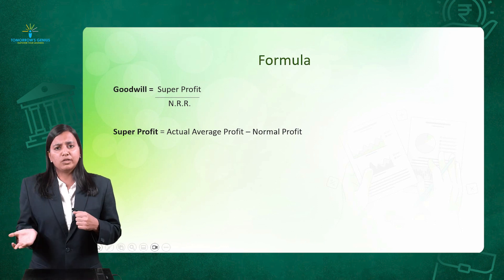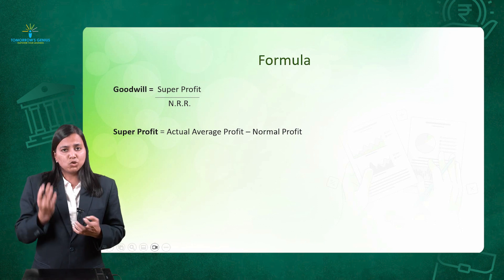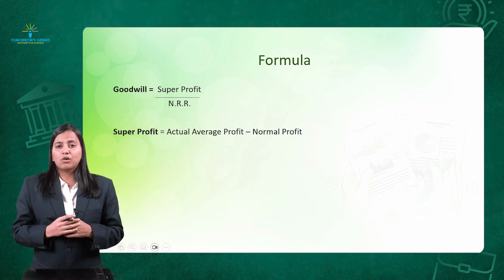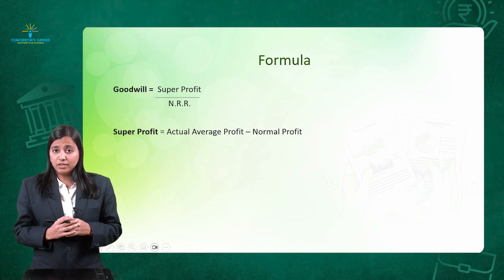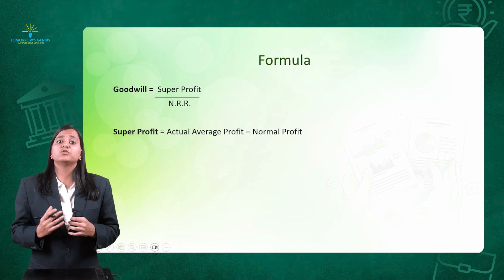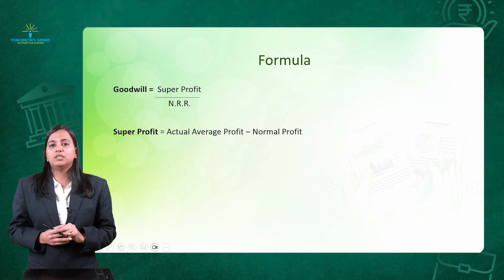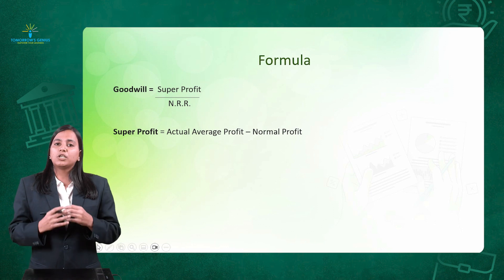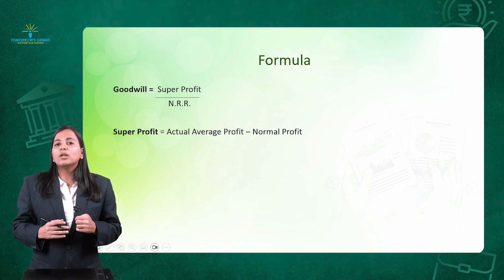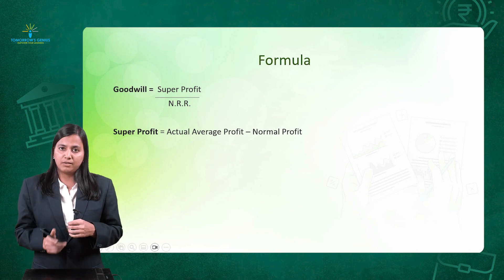NRR stands for normal rate of return, which is given to you in the question. Super profit is given by the formula: average profit minus normal profit. We have covered and calculated super profit in video number 2 as well as video number 3.